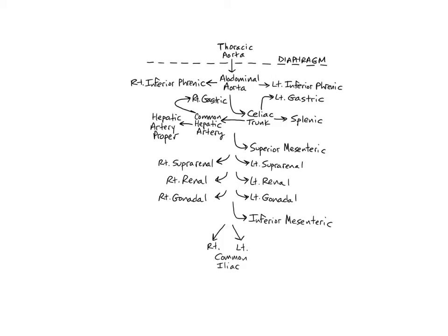Hello, anatomy students. In this video, I'm going to explain the major arteries that branch off the abdominal aorta and the direction of blood flow through them. The abdominal aorta begins just after the thoracic aorta passes through the diaphragm, through an opening called the aortic hiatus. The aorta lies just anterior to the vertebral column as it descends down the abdomen.